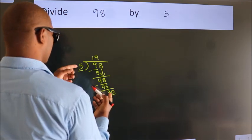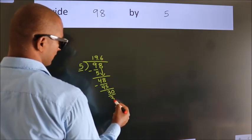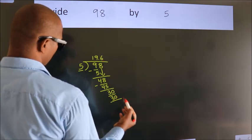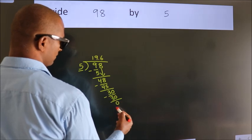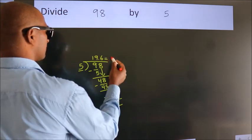When do we get 30 in the 5 table? 5 times 6 is 30. Now we subtract and get 0. We got remainder 0, so this is our quotient.